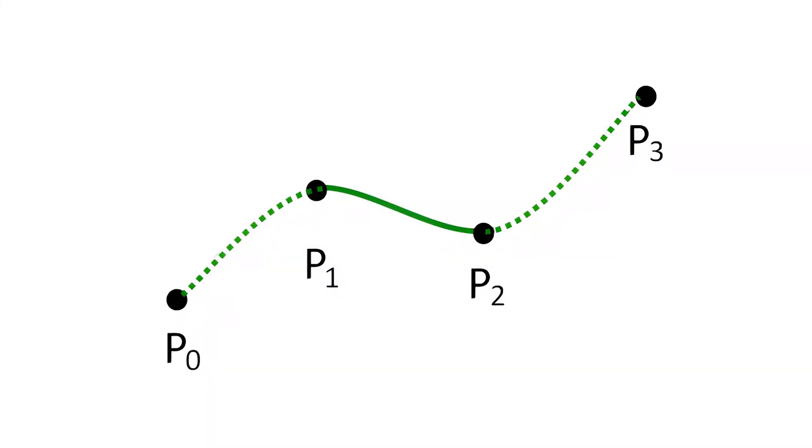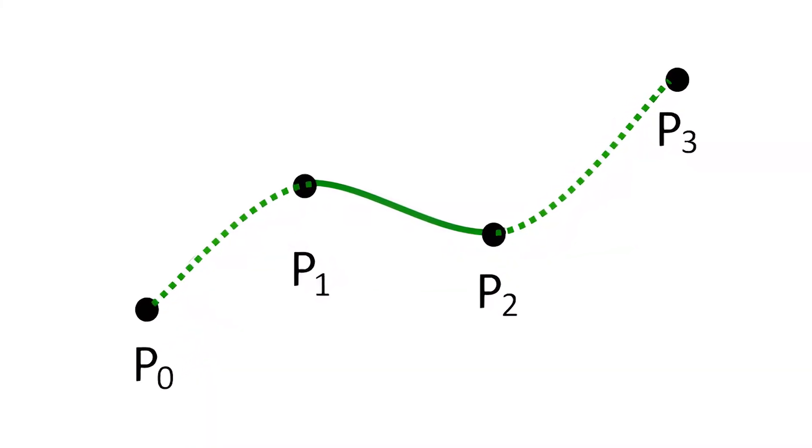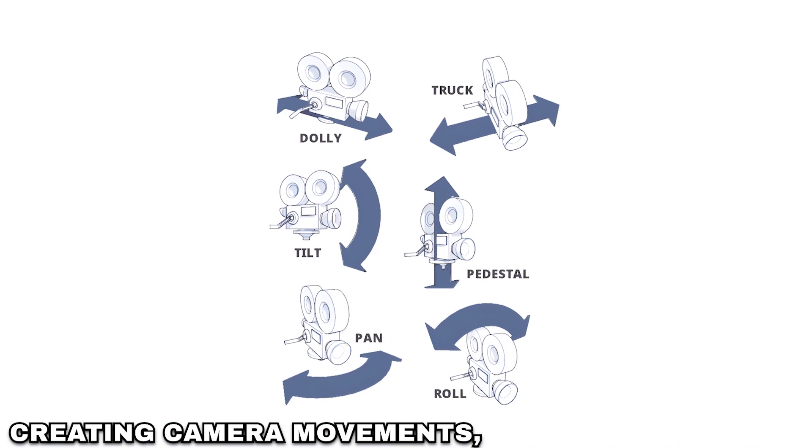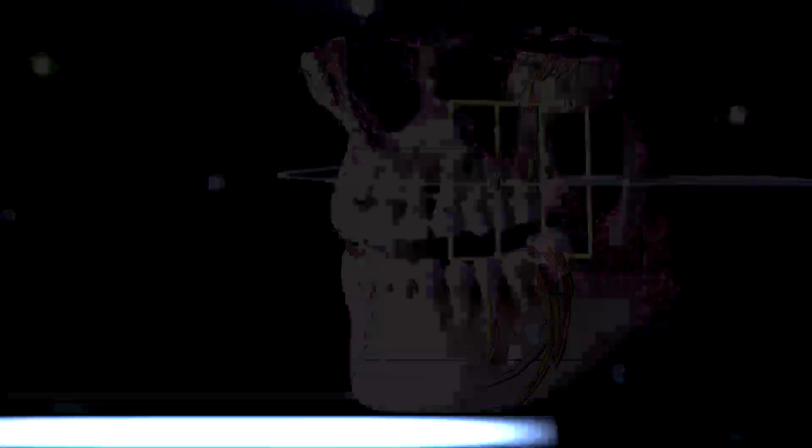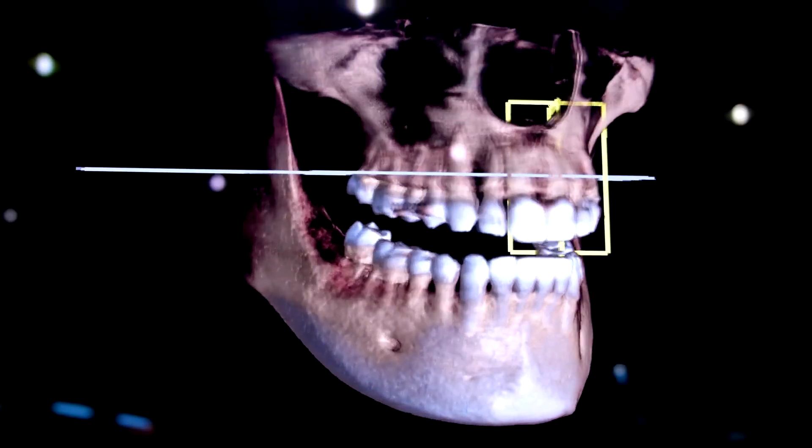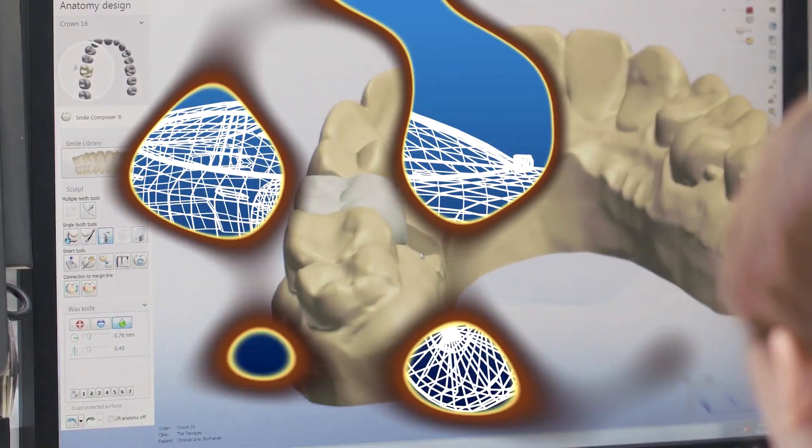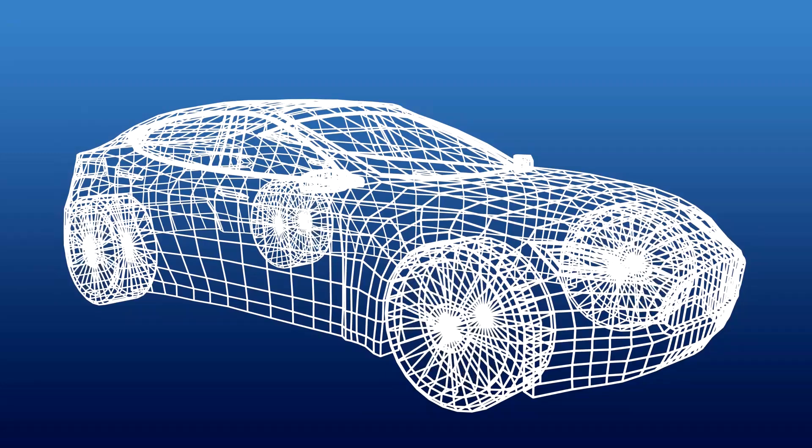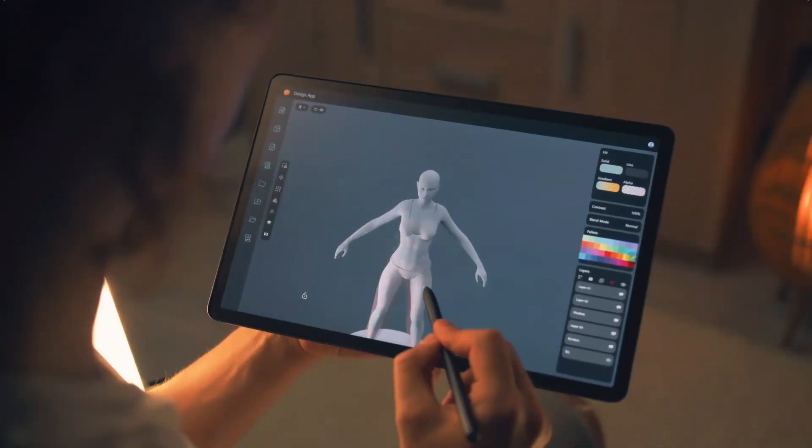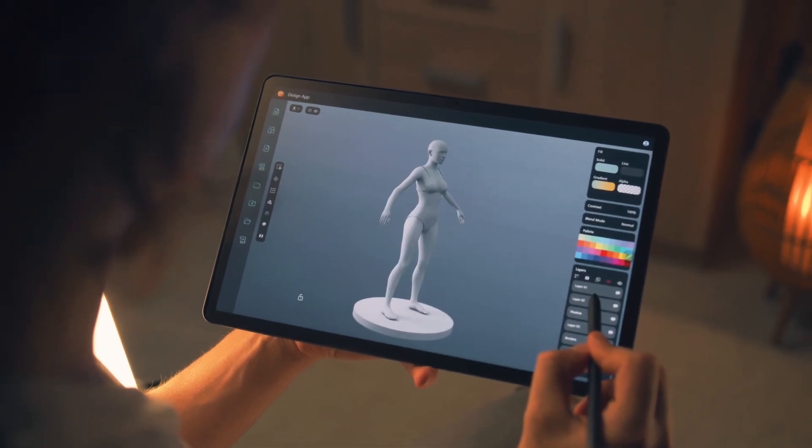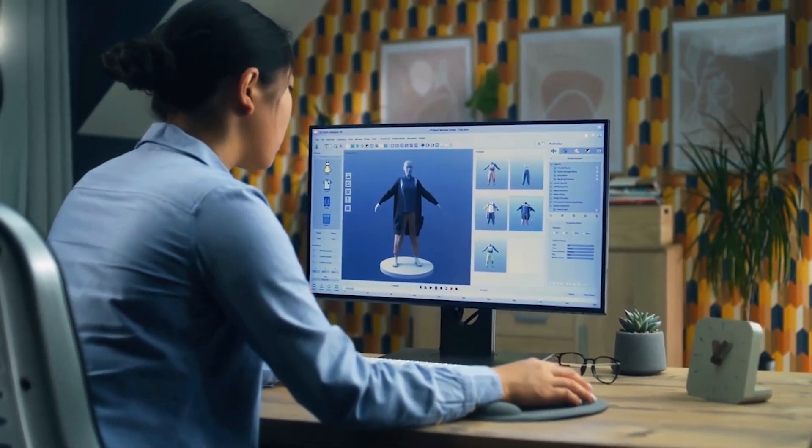Catmull-Rom Splines find applications in a variety of fields, including computer-aided design, computer graphics, and animation. They are widely used for creating camera movements, character animations, and shapes in 3D modeling. This works by interpolating between adjacent control points, creating a curve that smoothly passes through each one. The curve is influenced not only by the control points but also by those around them. It results in a continuous and aesthetic trajectory.